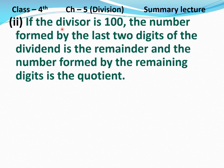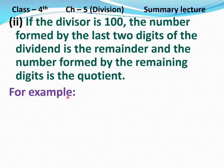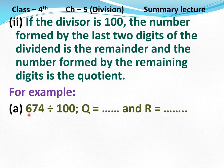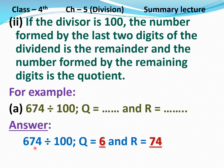Second: if the divisor is 100, the number formed by the last two digits of the dividend is the remainder and the number formed by the remaining digits is the quotient. For example, part A: 674 divided by 100. Divisor is 100, so the last two digits of the dividend, 7 and 4, form 74, which will be the remainder. The remaining digit, 6, will be the quotient. Answer: 674 divided by 100 — quotient equals 6 and remainder equals 74. Clear?